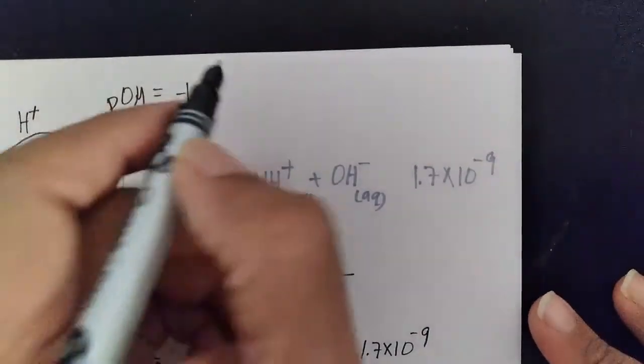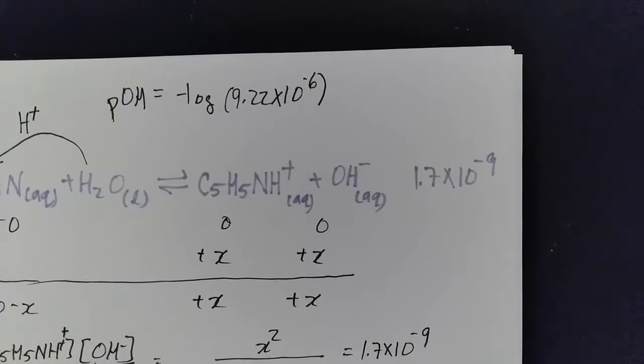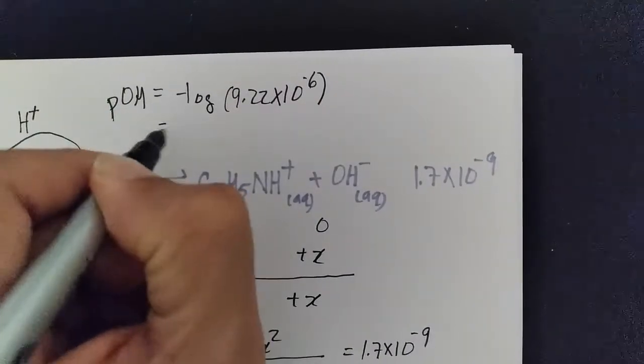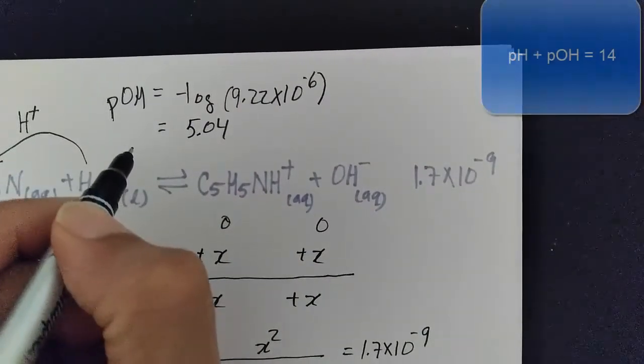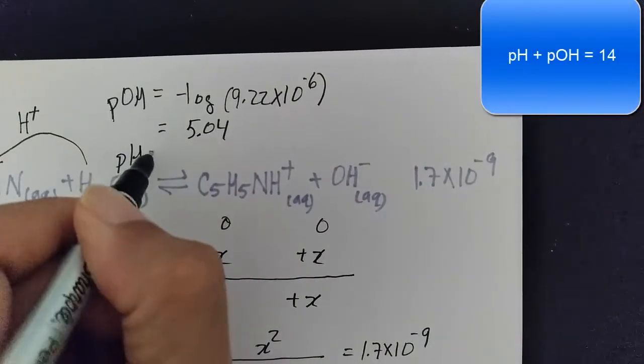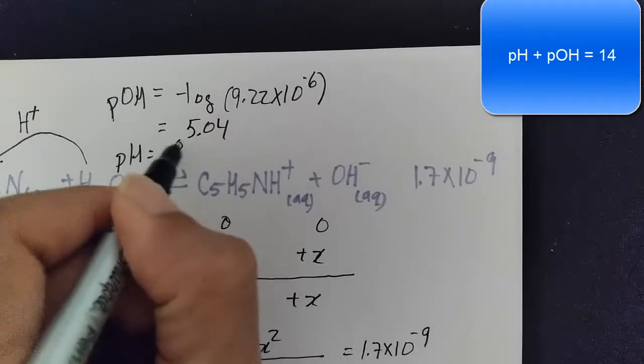Here you don't want to put units in my calculator. That's giving me an answer of a pOH of about 5.04. So 14 minus 5.04 will give you the pH, and that's about 8.96.